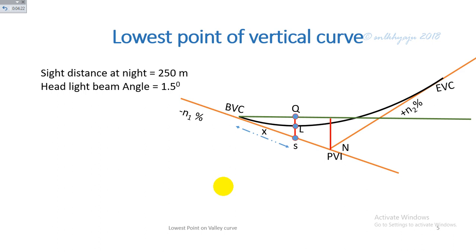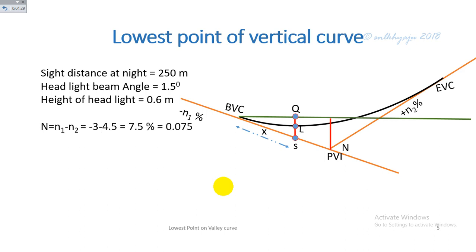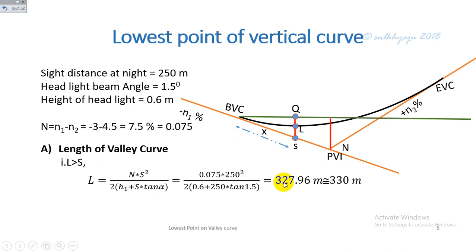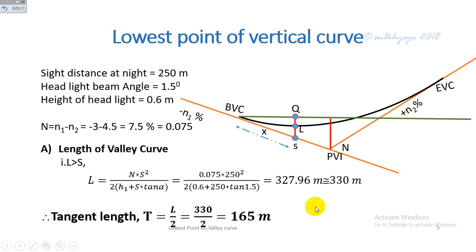Given: headlight beam angle α = 1.5°, height of headlight = 0.6 m, and deviation angle N = N1 − N2 = 0.075. For the length of valley curve for night driving, we first assume the curve length is greater than sight distance. Using the relevant relation, the length is calculated as approximately 327.96 m, rounded to 330 m. The tangent length T = L/2 = 165 m.